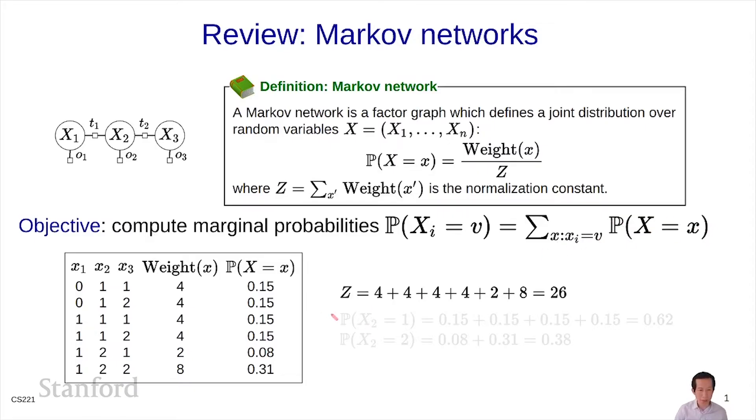In this example, if you look and ask for the probability of x2 equals 1, you sum over all the rows where x2 equals 1, that gives you 0.62. And if you ask for x2 equals 2, then you're summing over the last two rows, and that gives you 0.38.